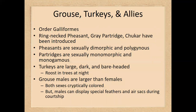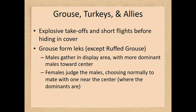Turkeys, grouse, pheasants, partridges, chukar, and the rest of the galliforms are all in the same group. There is a wide variety within this group — some are sexually dimorphic and polygamous, while others show no sexual dimorphism and are relatively monogamous. Turkeys roost in trees at night in the wild. Male grouse have special display feathers and air sacs used in courtship dances. They are all capable of short, explosive flights but tend not to fly very far, preferring to hide in cover. With the exception of the ruffed grouse, the grouse do form leks.